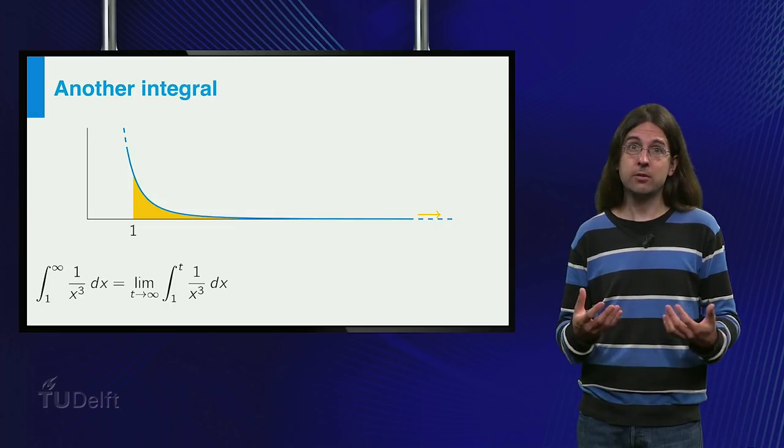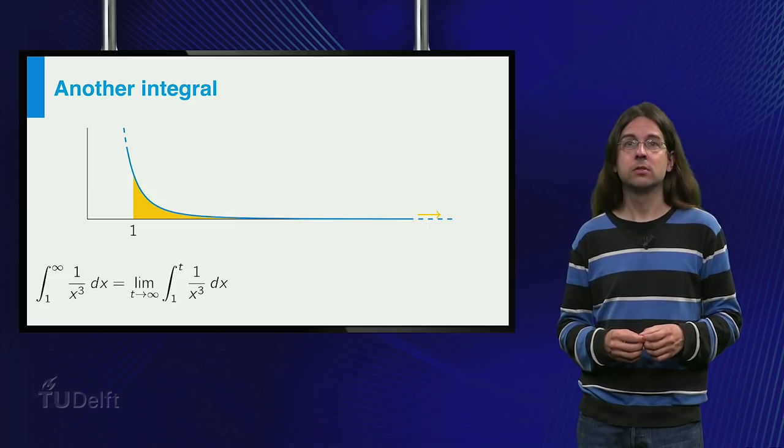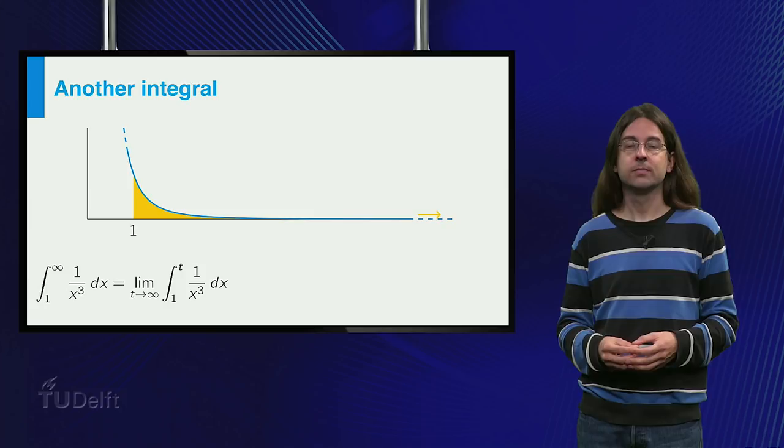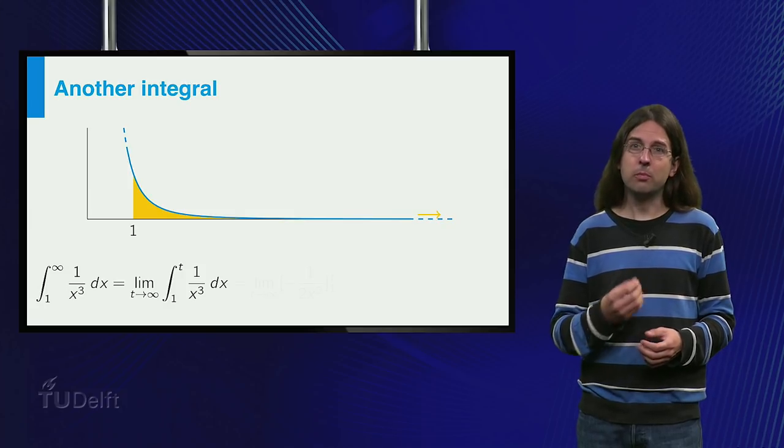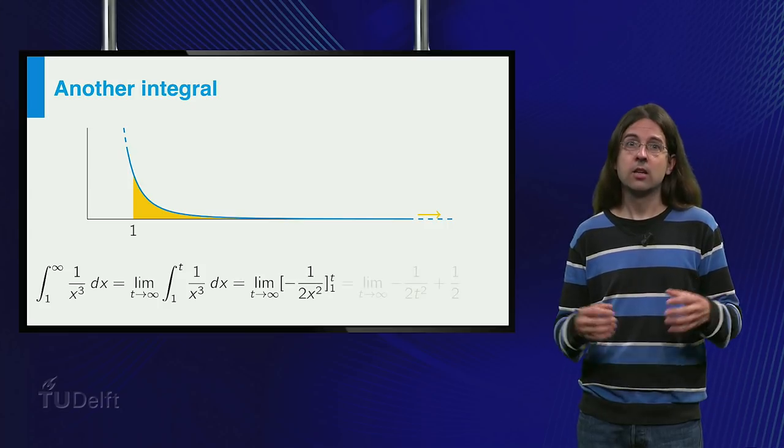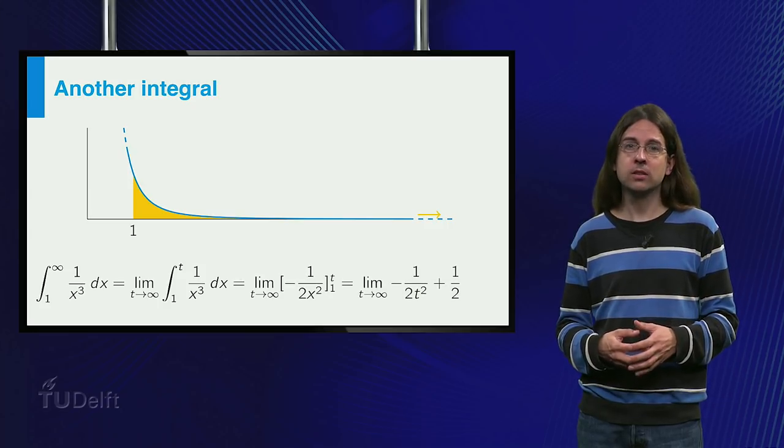The integral itself is now an integral over a finite interval, just as we are used to, and can be readily calculated. It is shown to equal minus 1 over 2 x squared between 1 and t, that is minus 1 over 2 t squared plus a half.